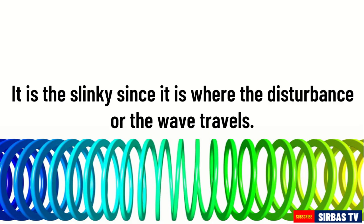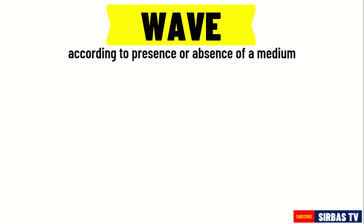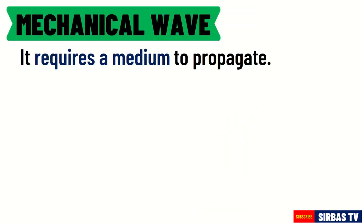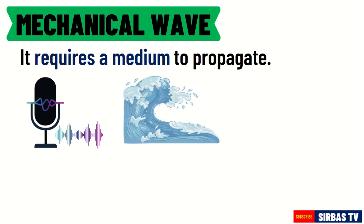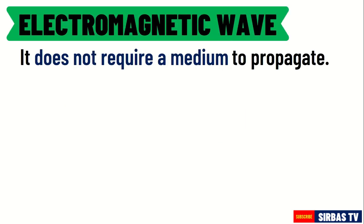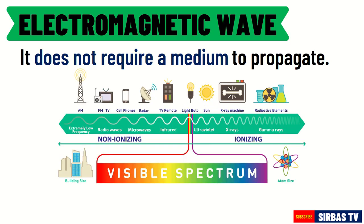According to the presence of a medium, waves can be categorized into two: mechanical wave and electromagnetic wave. When a wave requires a medium in order to propagate, it is called a mechanical wave. Examples of mechanical waves include sound waves, water waves, and waves formed from a rope. On the other hand, when a wave does not require a medium, it is called an electromagnetic wave. Some examples of electromagnetic waves are radio waves, visible light, microwaves, and X-rays. These electromagnetic waves are arranged according to their frequencies and wavelength in an electromagnetic spectrum.